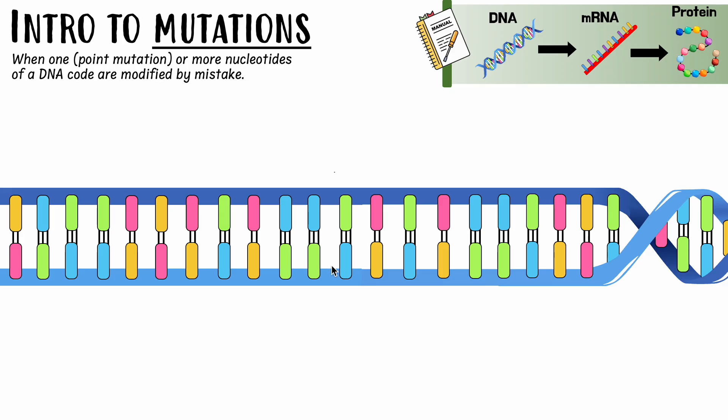Now when we talk about mutations for the IB, what you guys have to know are three kinds of broad categories of mutations. Let's start here with one - substitution mutations. This is a kind of mutation where one of the bases are substituted for another.